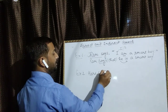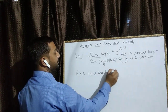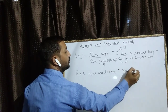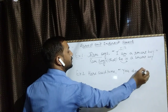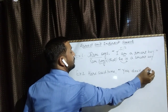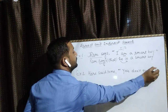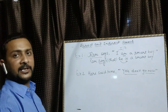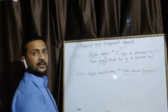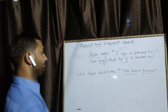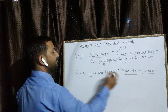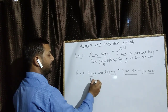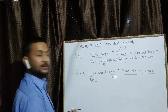एक और example: Hari said to me, 'You do not go now.' This is a negative assertive sentence। Reporting verb की side में: subject change नहीं करेंगे, object change नहीं करेंगे।